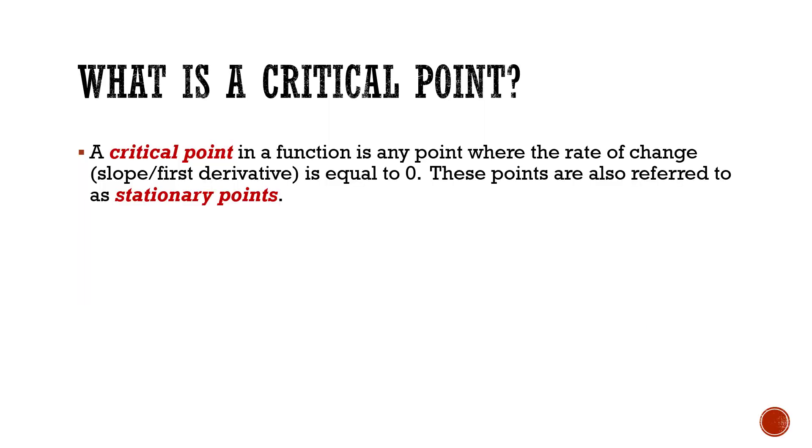So what is a critical point? A critical point in a function is any point where the rate of change, that slope, that first derivative, is equal to zero.